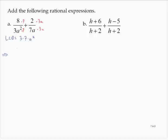So that would give me 56 over 21a square plus 6a over 21a square.